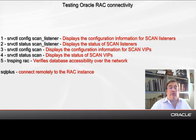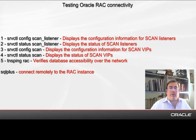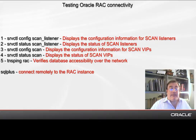First, we will use Server Control Config ScanListener, which displays the configuration of the scan listeners available to the cluster. Second, Server Control Status ScanListener, which shows the status of the scan listener — we want to make sure that the scan listeners are both enabled and running. Third, Server Control Config Scan, which displays the scan name and the virtual IP addresses associated to it. Fourth, Server Control Status Scan, which shows the status of the scan — we want to verify that all nodes participating in the cluster have the virtual IPs enabled and running. Finally, the TNS Ping command will make sure that the RAC instance named RAC is resolved by TNS.